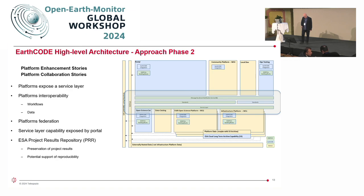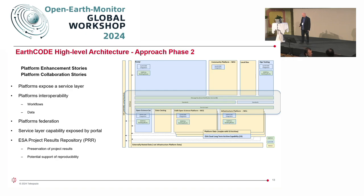Finally, we're looking at the integration of the ESA project results repository. This will provide capability to preserve projects — both the products and the input data. That helps support reproducibility in the future, because if a user discovers a workflow and wants to run it on the platform of their choice, having an exact copy of the input data stored in a safe location means we can reuse that input data on a platform of the user's choice, hopefully increasing the success of reproducing an experiment.